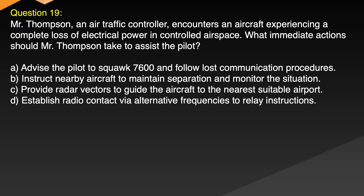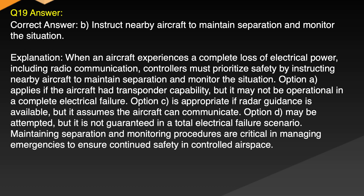Question 19. Mr. Thompson, an air traffic controller, encounters an aircraft experiencing a complete loss of electrical power in controlled airspace. What immediate actions should Mr. Thompson take to assist the pilot? A. Advise the pilot to squawk 7600 and follow lost communication procedures. B. Instruct nearby aircraft to maintain separation and monitor the situation. C. Provide radar vectors to guide the aircraft to the nearest suitable airport. D. Establish radio contact via alternative frequencies to relay instructions. Correct answer: B. Instruct nearby aircraft to maintain separation and monitor the situation.